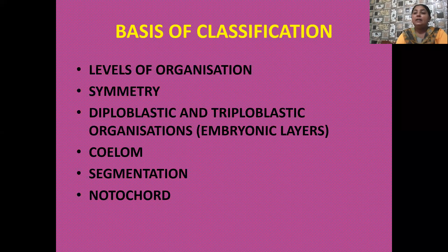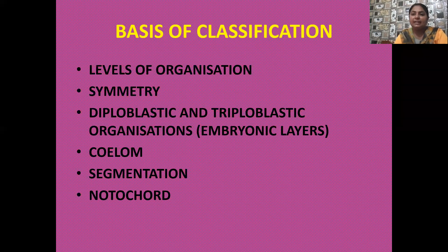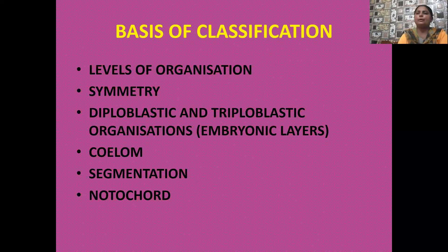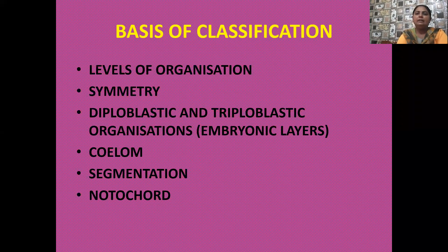The second type of symmetry is radial symmetry. In radial symmetry, when you cut the body of the animal through its central axis, you get two equal identical halves. This type of symmetry is known as radial symmetry. Three phyla have radial symmetry: phylum Coelenterata, phylum Ctenophora (sea walnuts), and phylum Echinodermata (spiny skinned animals, including starfishes).